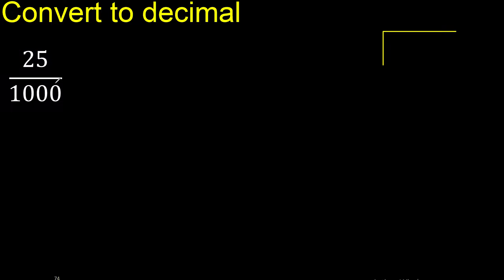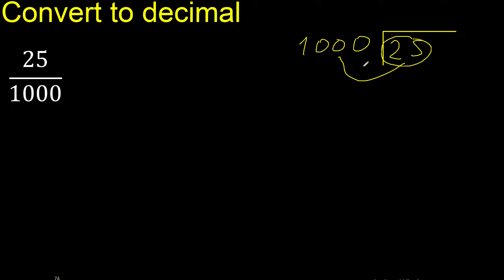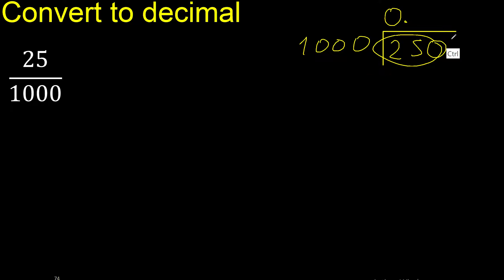25 divided by 1000 is less than 1000, therefore complete. Always complete with 0. Here: 0 point. Is less, therefore 0.